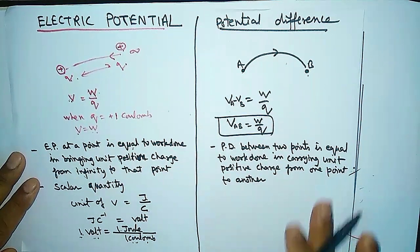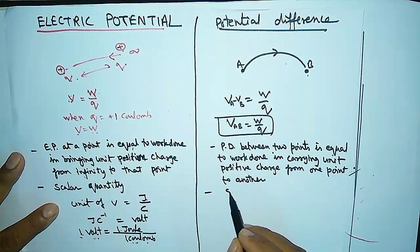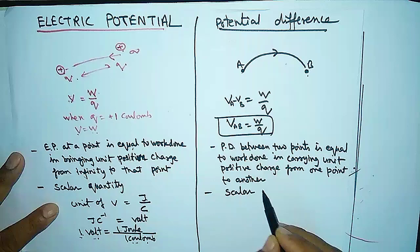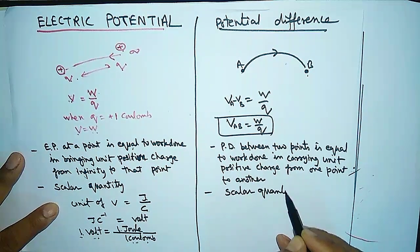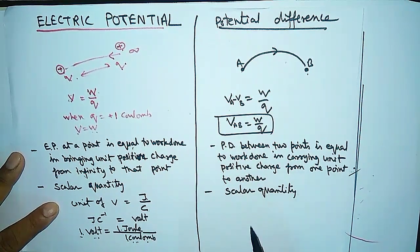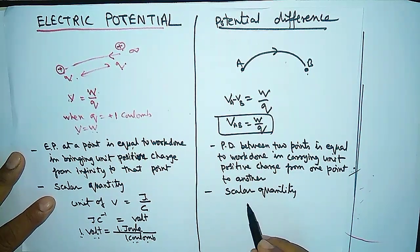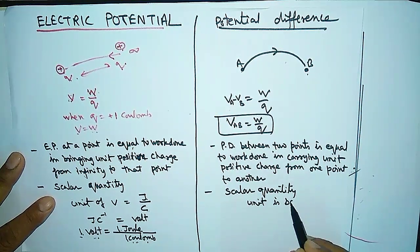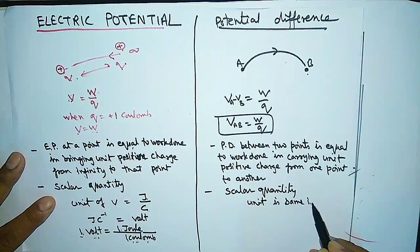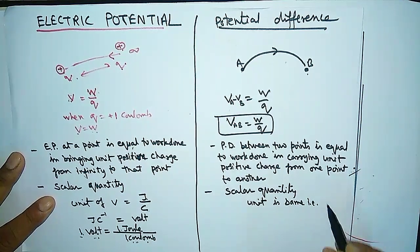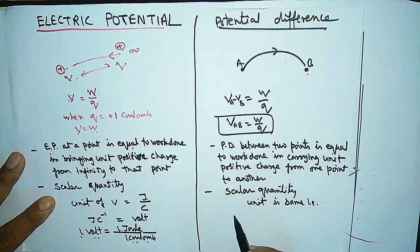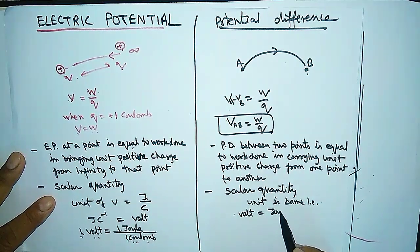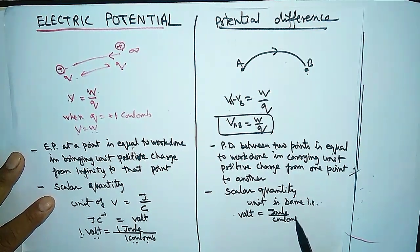Remember, potential difference is also a scalar quantity — it does not depend on direction. Its unit is the same as electric potential, that is, volt, where 1 volt equals 1 joule per coulomb. We can define 1 volt potential difference as 1 joule of work done in carrying 1 coulomb of charge.